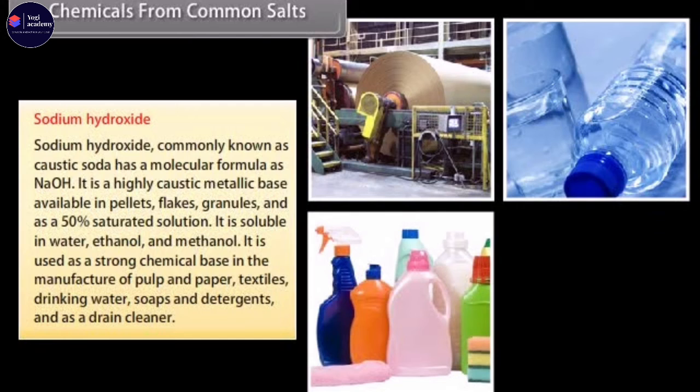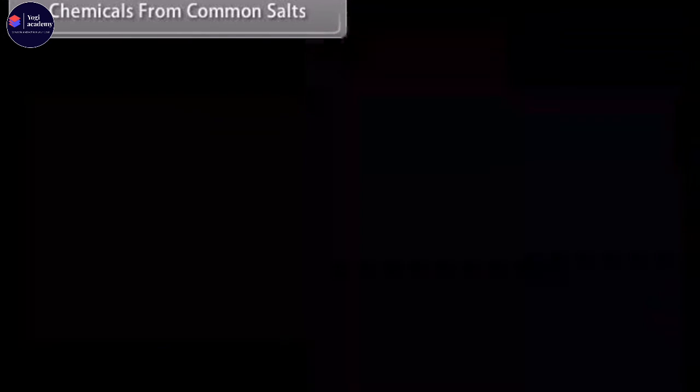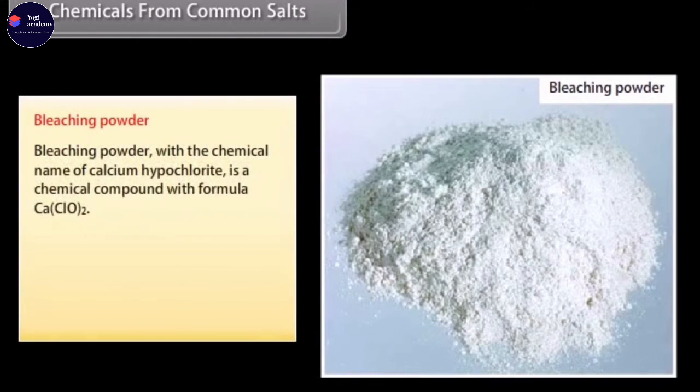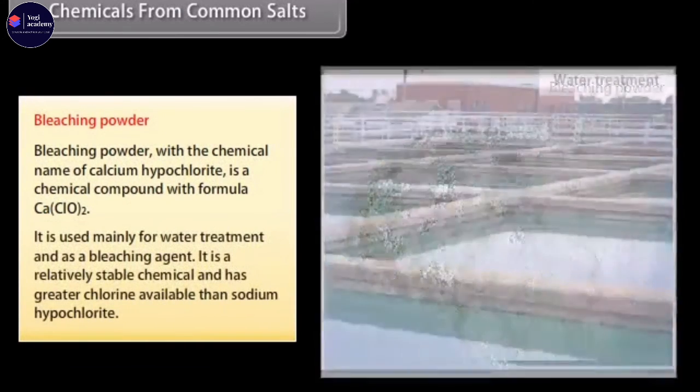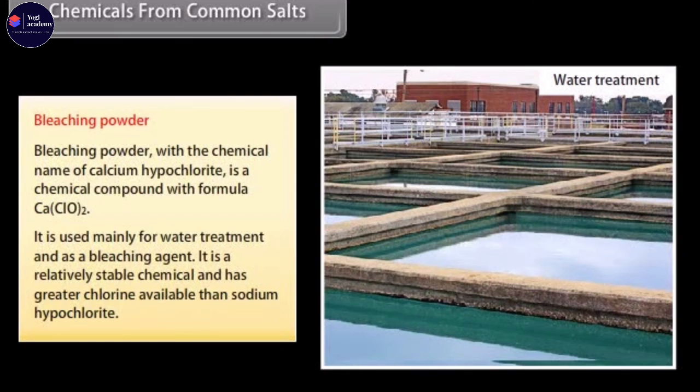Bleaching powder with the chemical name of calcium hypochlorite is a chemical compound with formula CaClO2. It is used mainly for water treatment and as a bleaching agent. It is relatively stable chemical and has greater chlorine available than sodium hypochlorite.